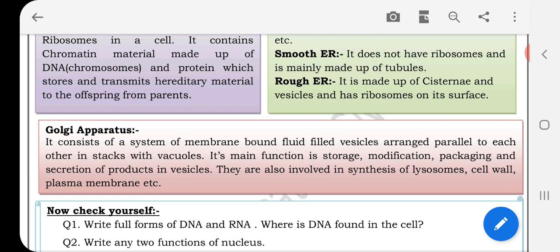Golgi apparatus: it consists of a system of membrane-bound fluid-filled vesicles arranged parallel to each other in stacks with vacuoles. Its main function is storage, modification, packaging and secretion of products in vesicles. They are also involved in synthesis of lysosome, cell wall, plasma membrane, etc.